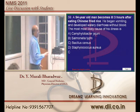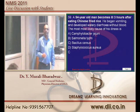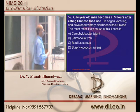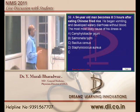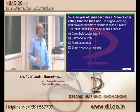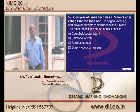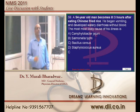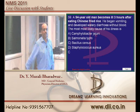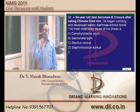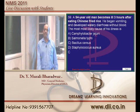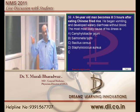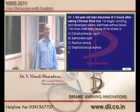A 54-year-old becomes ill three hours after eating Chinese fried rice. What are the only two food poisonings with a very short incubation period? Staphylococcus aureus and Bacillus cereus - both cause food poisoning with a very short incubation period.